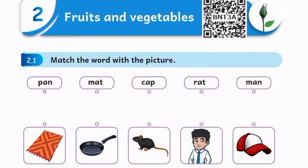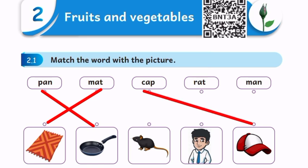See the first word: pan. Match it with pan. Next word: mat. Match it with mat. Then cap — match it with cap. Next word: rat — match it with rat. The last one: man — match it with man.